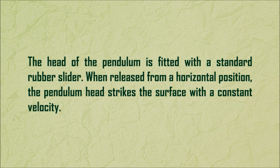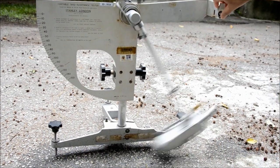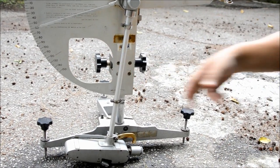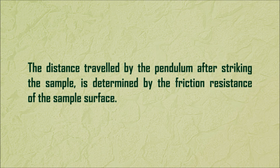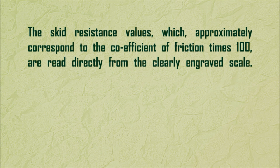The head of the pendulum is fitted with a standard rubber slider. When released from a horizontal position, the pendulum head strikes the surface with a constant velocity. The distance traveled by the pendulum after striking the sample is determined by the friction resistance of the sample surface. The skid resistance values, which approximately correspond to the coefficient of friction times 100, are read directly from the clearly engraved scale.